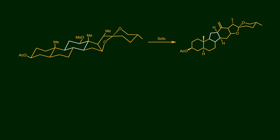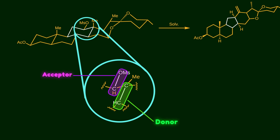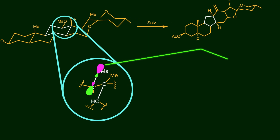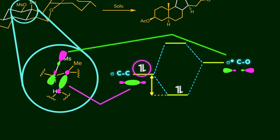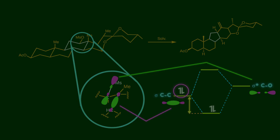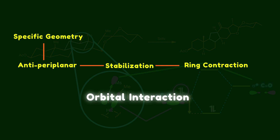Now let's analyze the orbital interactions that lead to the ring contraction. Because of the high electronegativity of oxygen, the carbon-oxygen bond acts as an acceptor, and the carbon-carbon bond is a donor containing two bonding electrons. We consider the empty anti-bonding orbital of the carbon-oxygen bond and the bonding orbital of the carbon-carbon bond. These two orbitals interact, and the two electrons of the carbon-carbon bond move into a new, more stable molecular orbital. This stabilization manifests as ring contraction. So orbital interaction is the beating heart of stereoelectronic effects.